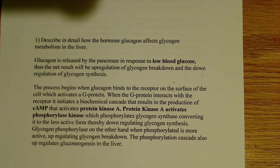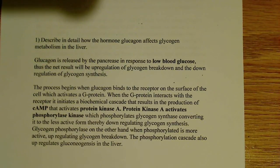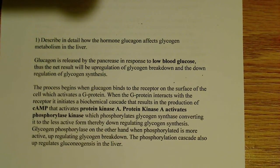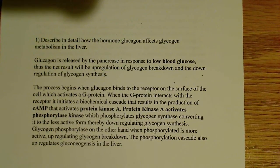Glycogen metabolism means glycogen breakdown, which is called glycogenolysis, or glycogen synthesis. So they're talking about the breakdown or formation of glycogen in the metabolism. What does glucagon do? How does glucagon affect this process?